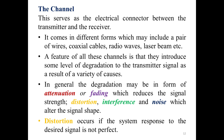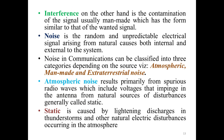Distortion occurs if the system response to the desired signal is not perfect. Interference, on the other hand, is the contamination of the signal, usually man-made, which has a form similar to that of the wanted signal. Noise is the random and unpredictable electrical signal arising from natural causes, both internal and external to the system.